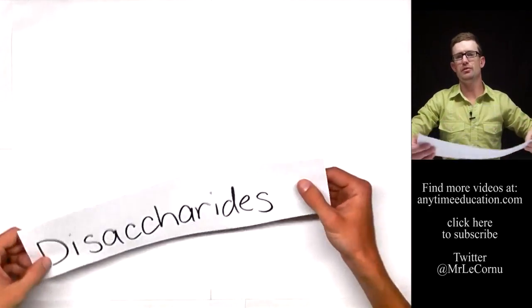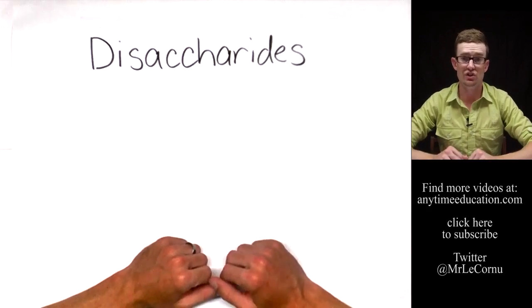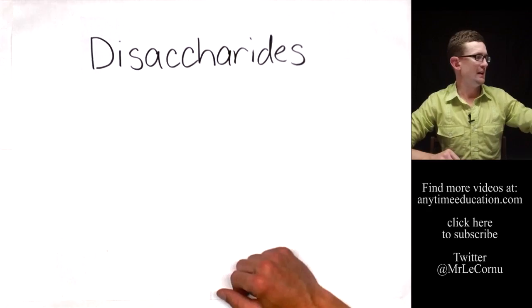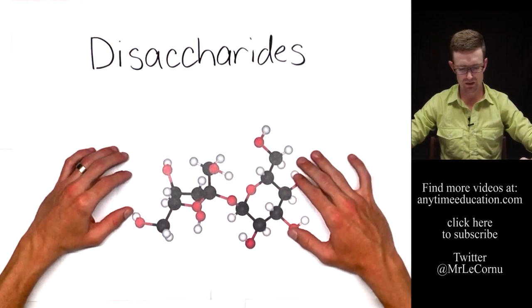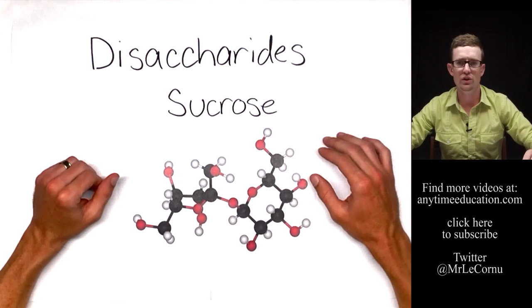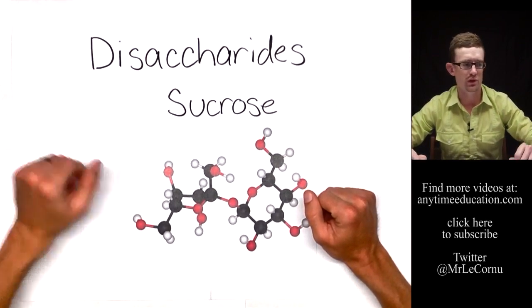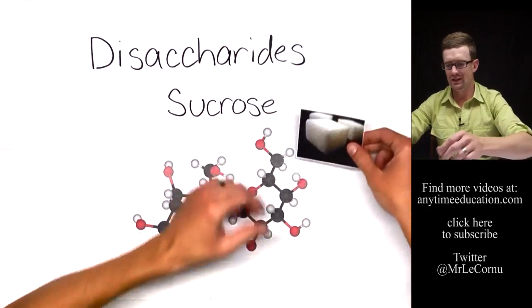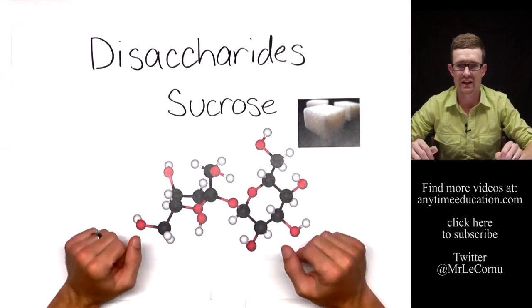The smaller subunits of polysaccharides made up of two monosaccharides are called disaccharides — di meaning two. An example of a disaccharide is sucrose. Sucrose is made up of one glucose molecule and one fructose molecule, and sucrose is actually simple table sugar which you use around the house.